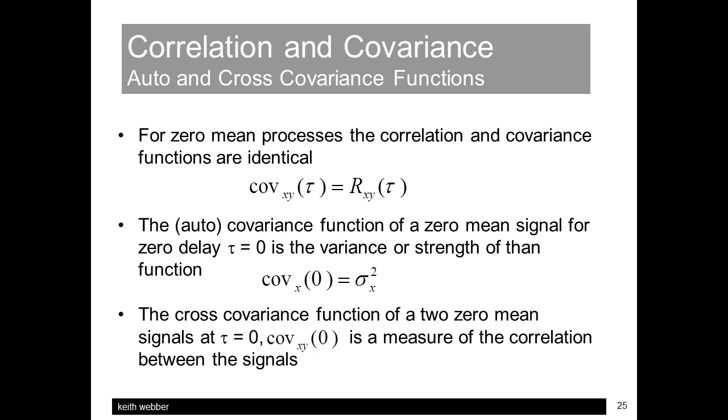For the cross covariance of two signals, setting Tor to zero gives a measure of the correlation between the signals lined up on the same timescale.